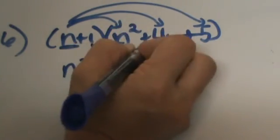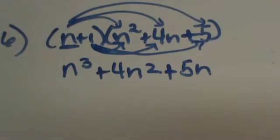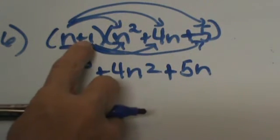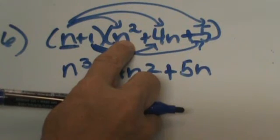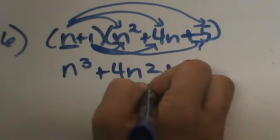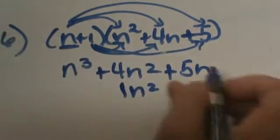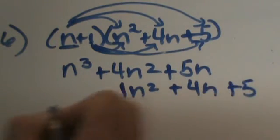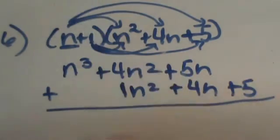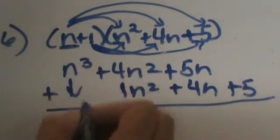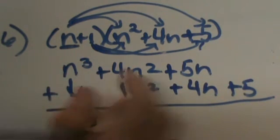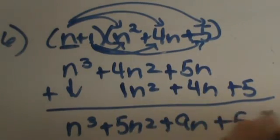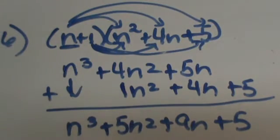Now let's distribute the positive 1 to each term. I'll line each result up under its like term to make adding easier: 1 times n squared gives 1n squared, lined up under 4n squared; 1 times 4n gives positive 4n, lined up under 5n; and 1 times 5 is positive 5. Now adding with like terms aligned: n cubed has nothing to add with; 4n squared plus 1n squared is 5n squared; then 4n plus 5n is 9n; bring down the 5. Remember when adding you do not change the exponents — we just add like terms.